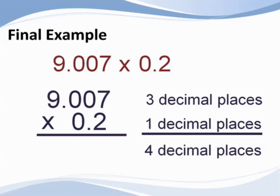Correct, four. Therefore, the decimal point goes between the one and the eight in the product.